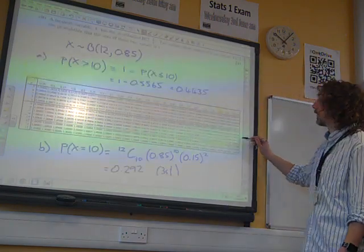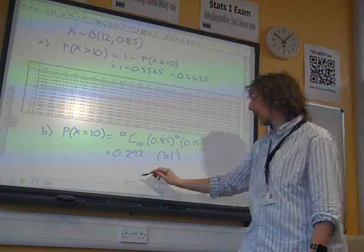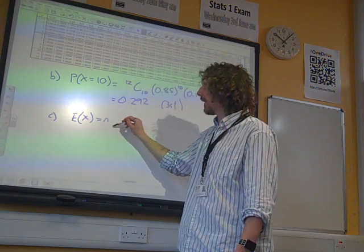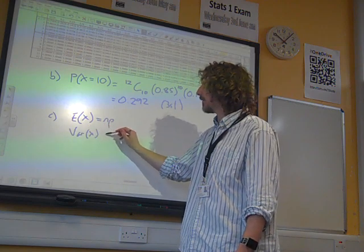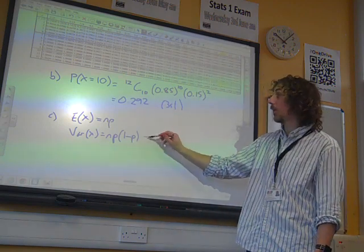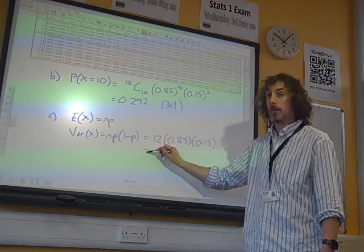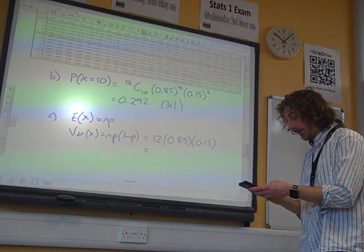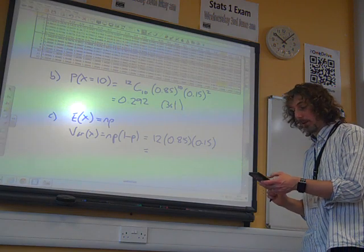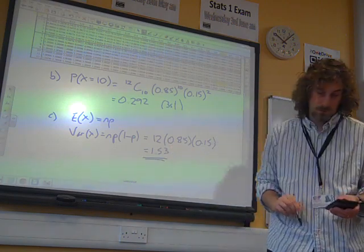Next, the question says, find the variance of X. Again, referring to the formula booklet, we're told that for a binomial distribution, the expectation of X is Np and the variance of X is Npq or Np times 1 minus P. So the variance that we're looking for is N times P times 1 minus P. And again, straight to the calculator, 12 times 0.85 times 0.15 gives us 1.53 as our value for the variance.